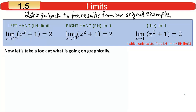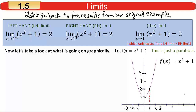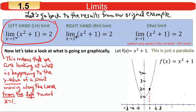Now let's look at what's happening graphically, because it's helpful to think about these things visually. If we think of x squared plus 1 as f(x), you can draw that — it's just a parabola. When you're approaching 1, you can see what's going on in that graph. For the left-hand limit, we're looking at what happens to the y-value of a point moving along that curve from the left toward x equal to 1. For example, suppose you pick a point to the left of 1 — you get something along the curve indicated by a red dot.